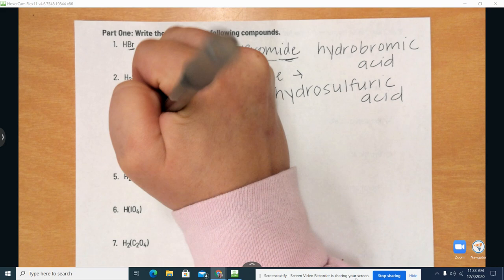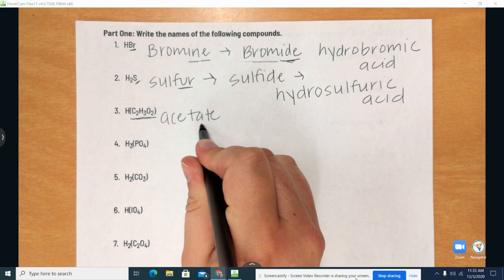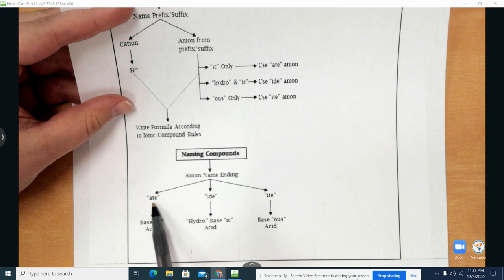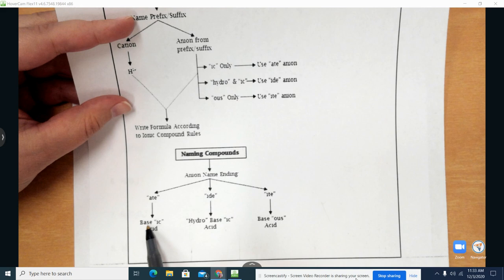So then I'm just going to go ahead and write this right here. So here we have the ending A-T-E. So then we just need to look at our cheat sheet on number one or on that first page. So then whenever we have A-T-E, that means we remove the A-T-E and replace it with I-C.